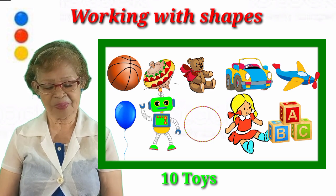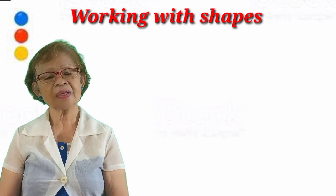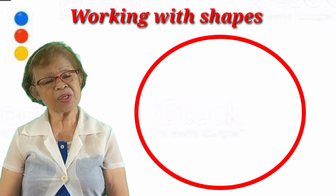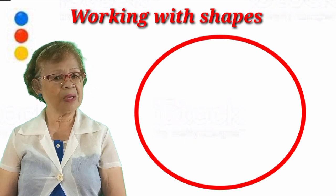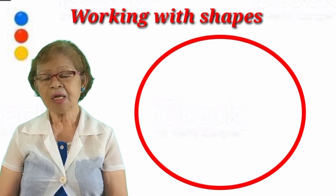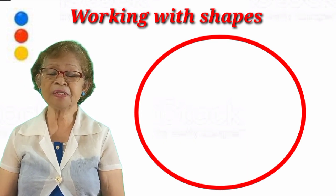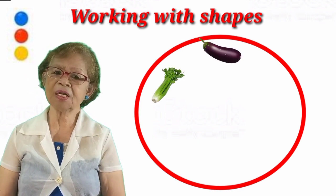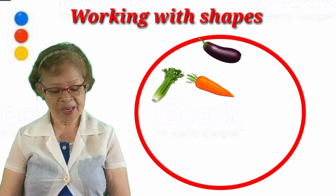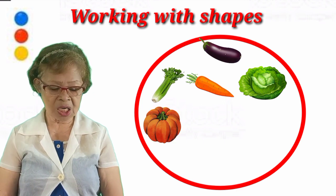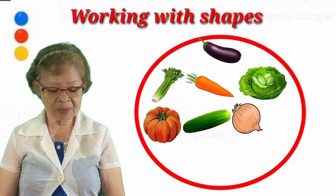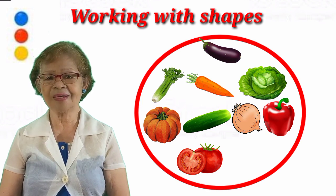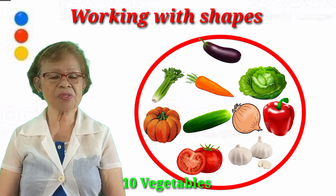Now we go to our circle. A circle is so easy to draw. We are going to put some vegetables inside. You have to love vegetables — it's good for our body. Let's start putting the vegetables into the circle: eggplant, celery, carrot, cabbage, squash, cucumber, onion, pepper, tomato, and garlic. So there are ten vegetables in the circle.